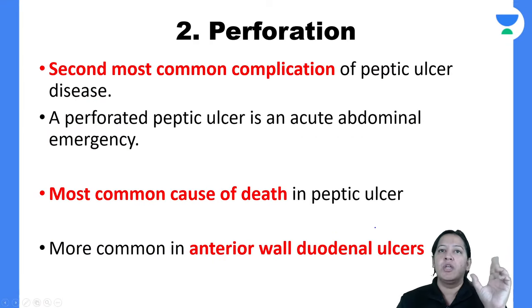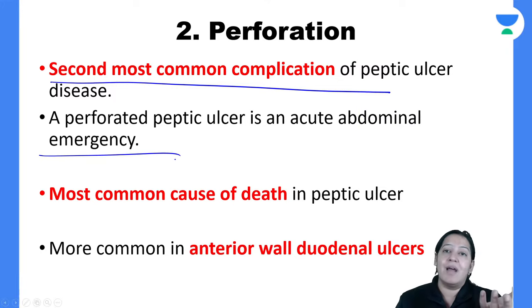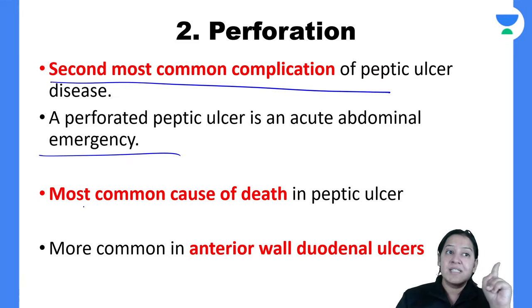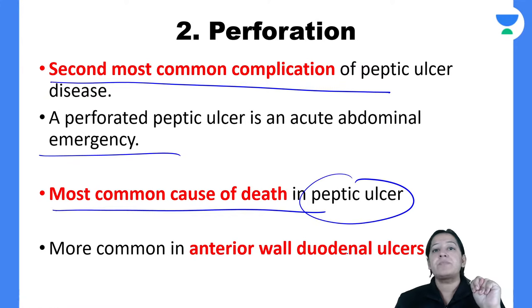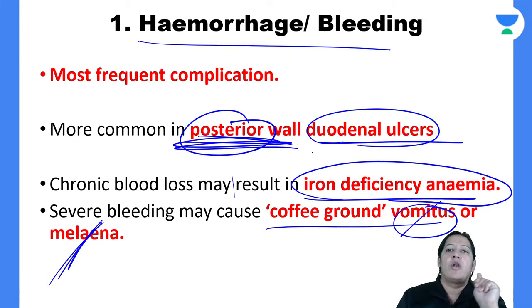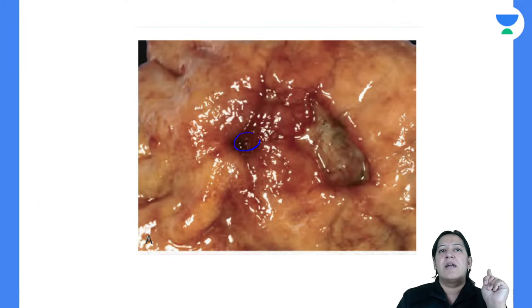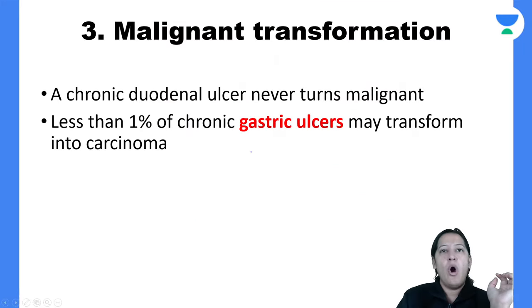The second complication is perforation — through-and-through perforation. That is the second most common complication and it is an emergency requiring immediate OT preparation. It is the most common cause of death in peptic ulcer. Duodenal ulcers rupture more commonly, on the anterior wall. Bleeding was from the posterior wall, but rupture is from the anterior wall. The ulcer opens into the abdominal cavity and food material comes out.